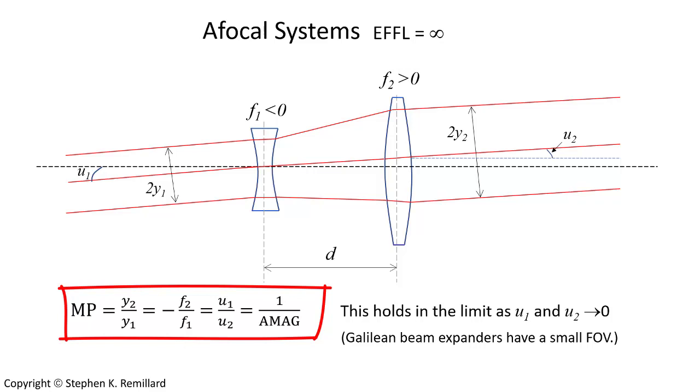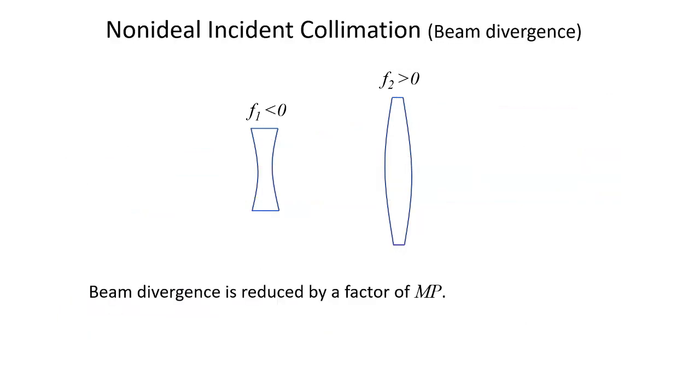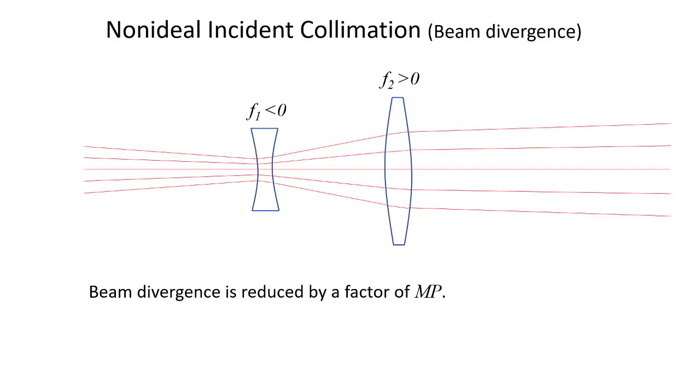And you still have an angular magnification that you can talk about. No beam is perfectly collimated, coming out of a laser even. You do have some amount of beam divergence for the incoming beam. And a benefit of a beam expander is that the divergence is reduced as the beam is expanded, and it is reduced by that magnification power.